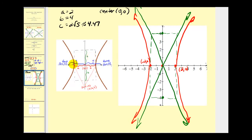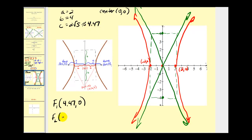We're also asked to find the foci. The foci will be on the right and on the left. We add and subtract c to the x-coordinate of the center. Since the center is (0, 0), one focus is (4.47, 0) and the other is (-4.47, 0).